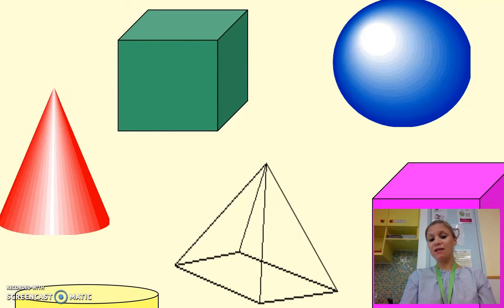So I hope you've learned something from 3D shapes. Remember the new language that we have learned. Faces are the flat part of the shape, edges are the straight part of the shape, and the vertex, or vertices, are the corners. Thank you very much. Bye.